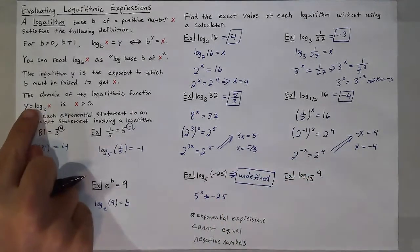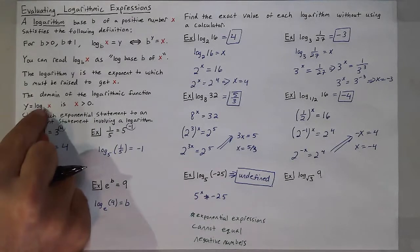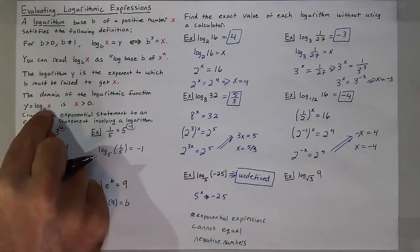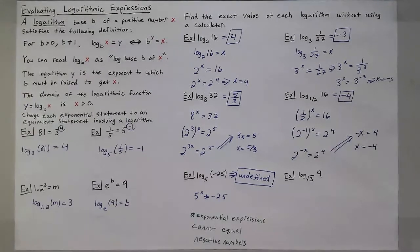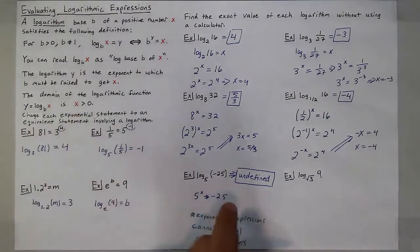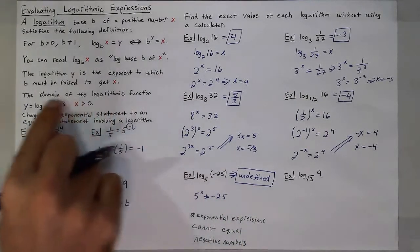Which brings me back to this last statement, that the domain of a logarithmic function, y is equal to log base b of x, is x is greater than 0. We need a positive number within the logarithm. And it can't even equal 0, because there is no power that can make 5 to the x equal to 0 either. So it can only be positive numbers.